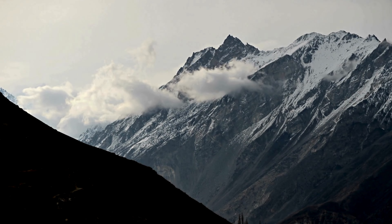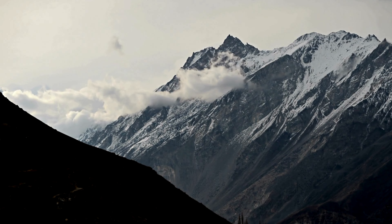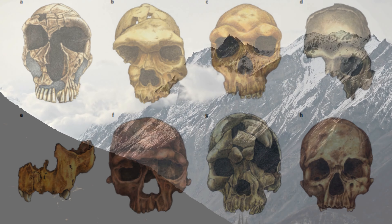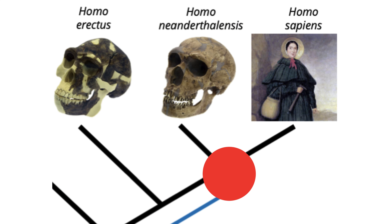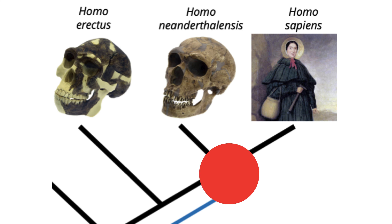During the Middle Pleistocene, Homo underwent evolutionary changes in Eurasia, sharing facial traits. These Middle Pleistocene hominins are potential ancestors of Homo sapiens. Identifying the last common ancestor is crucial, predating the modern human face emergence.